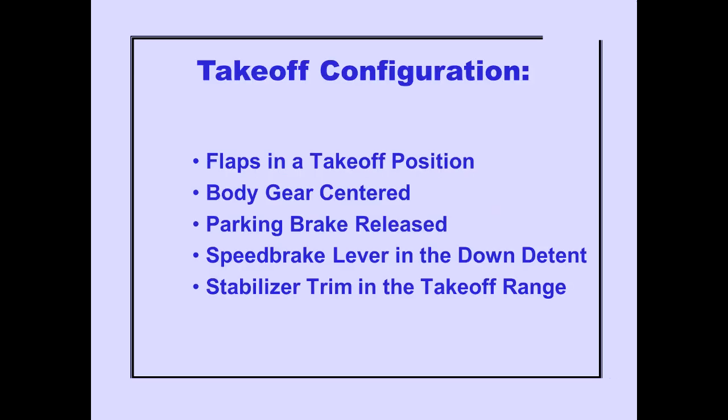The takeoff configuration warnings alert the crew that the airplane is not properly configured for takeoff. The correct takeoff configuration consists of flaps in a takeoff position, body gear centered, parking brakes released, speed brake lever in the down detent, and stabilizer trim in the takeoff range.